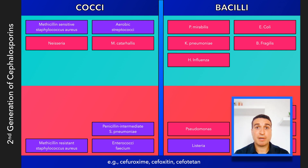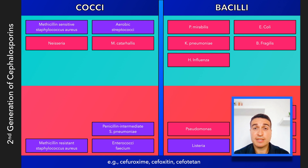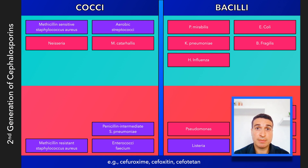Let's pause and go over some of the more important concepts. Recall that the first generation provides good coverage against most gram-positive organisms and some gram-negative enterics. The second generation builds on this by improving activity against gram-negatives. Cefuroxime in particular provides better coverage against Haemophilus influenzae, while cefotetan and cefoxitin provide coverage against Bacteroides fragilis.